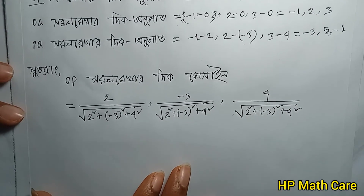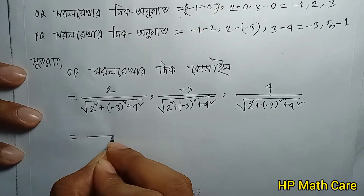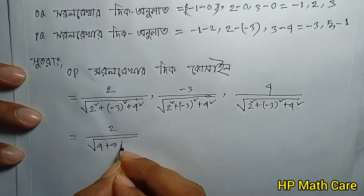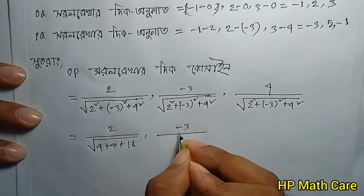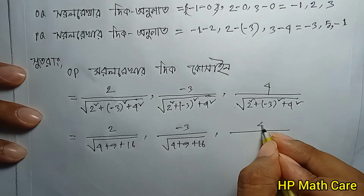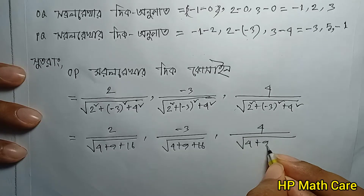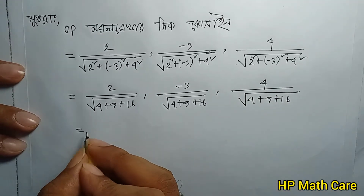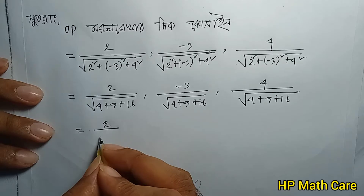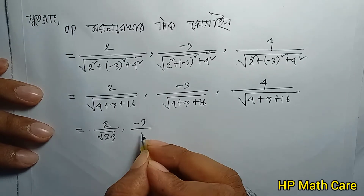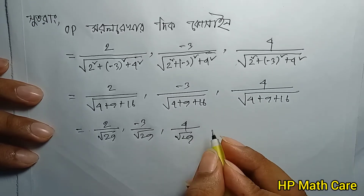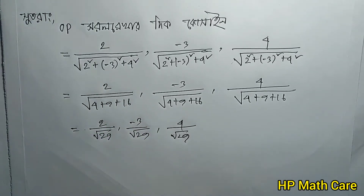So now you can get the calculation. 2 squared plus 9 plus 16 equals 4 plus 9 plus 16, which equals 29. So magnitude of OP is root 29. And we get: 4 plus 9 plus 16 equals 29. So direction cosines of OP are 2 over root 29, minus 3 over root 29, 4 over root 29.